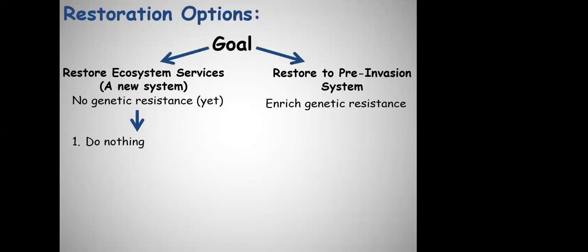When you're in a situation where invasives have done significant damage and you're looking at a restoration project, the choices a manager makes depend on a couple of things. One is whether the option is to restore the system to its pre-invasion state, which would require some sort of genetic resistance in the host tree and the ability to enrich for that. The other option, if genetic resistance is not yet available, is to restore an ecosystem focusing on restoring ecosystem services. In some cases, budgets may not warrant it, and there are cases where it's just not possible — you have to do nothing.